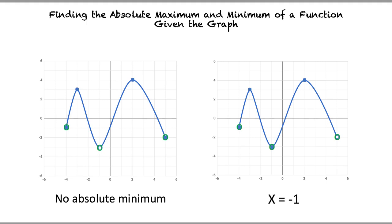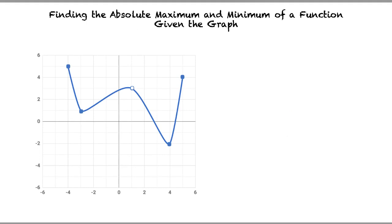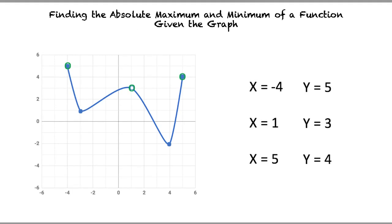Let's apply these rules to find the absolute minimum and maximum of the following function. We will start by finding the absolute maximum. The highest points on the graph are at the coordinates negative 4 and 5, 1 and 3, and 5 and 4. There is a hole at 1 and 3, but it's not the highest point of the function. That means we can have an absolute maximum but will ignore this coordinate. That leaves negative 4 and 5, and 5 and 4 as possibilities, so the highest y-value is at x equals negative 4 — this is our absolute maximum.